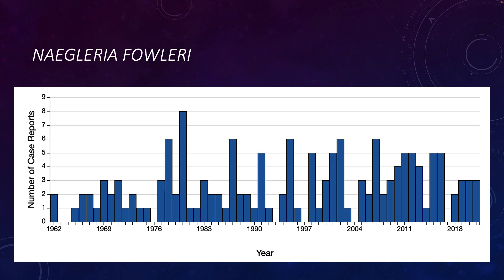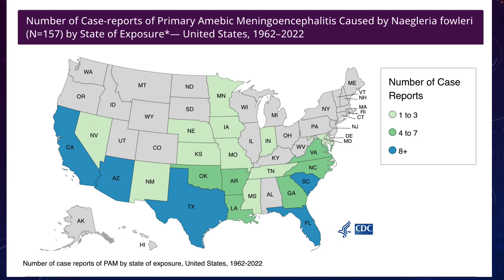Here are the number of case reports through 2022. All except four of these people have died, and these are case reports in the US. The distribution by state shows it is relatively more common in warm states, because the amoeba thrives in warm, untreated water. Generally patients get it when they swim in a natural, untreated, warm water source — the water goes up their nose, and the amoeba can travel from the nasal passages into the brain. It is a very dangerous infection.